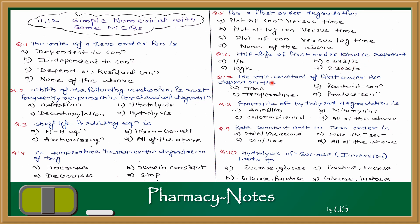Question 7: the rate constant of first order reaction depends on? The rate constant of first order reaction — if you remember the formula, it was dependent on temperature. So the answer is C: temperature.